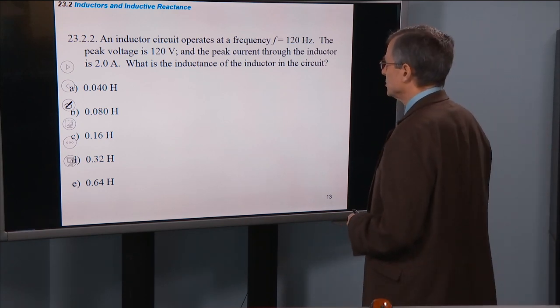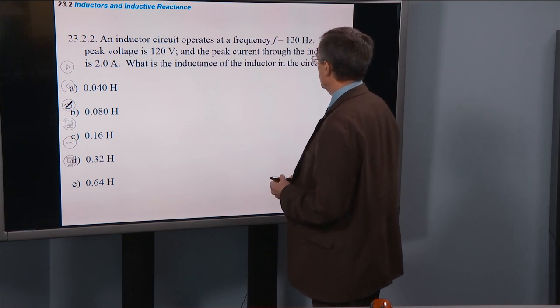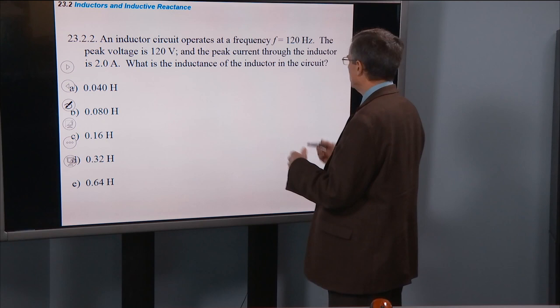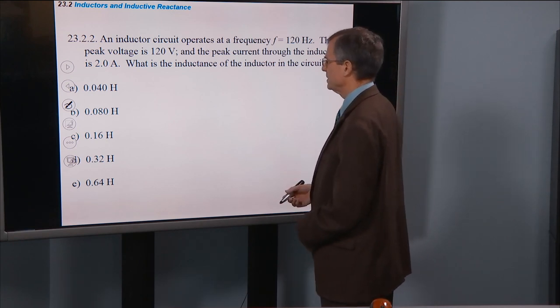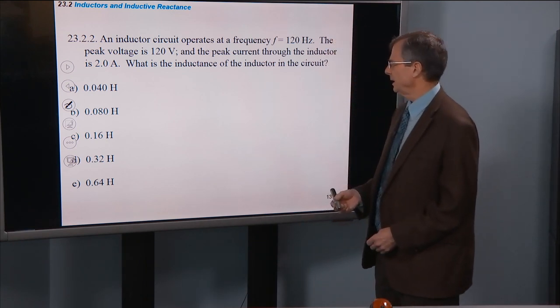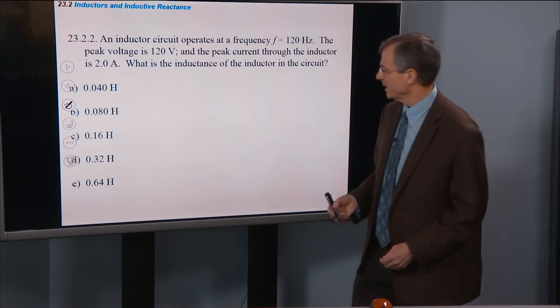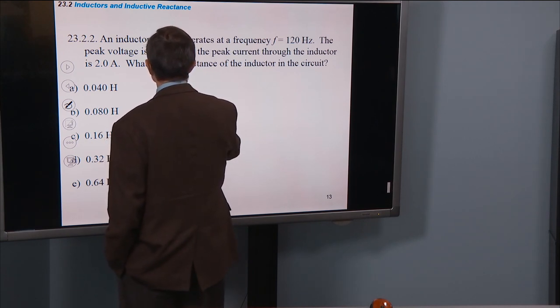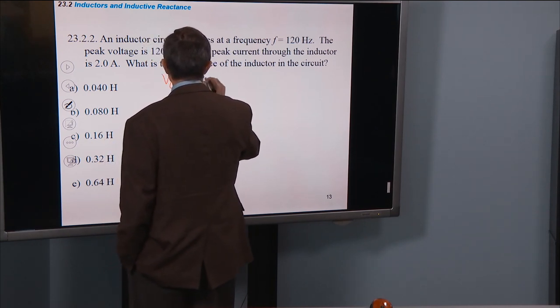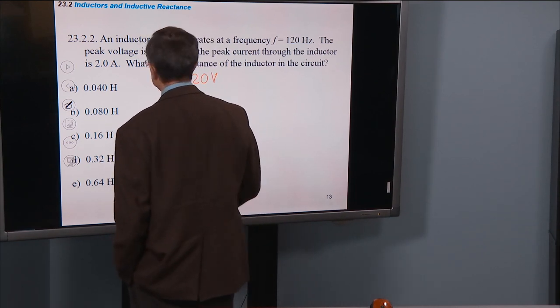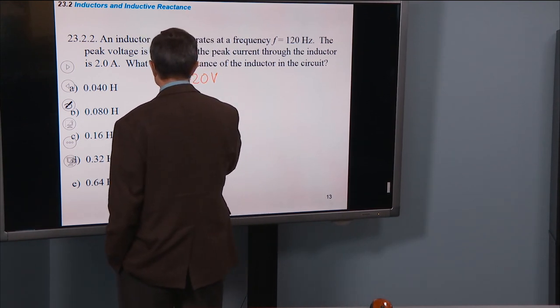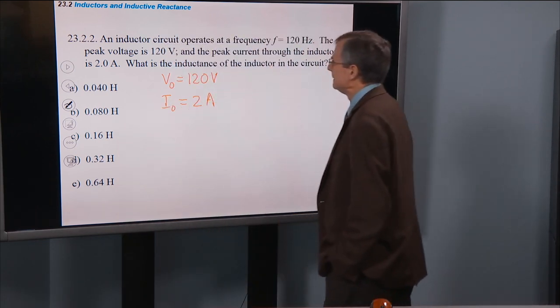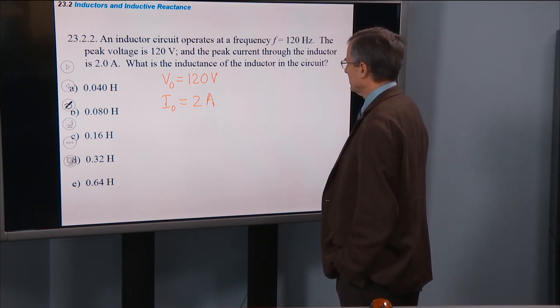An inductor circuit, a purely inductive circuit, operates at a frequency of 120 Hz, the peak voltage is 120 volts, and the peak current to the inductor is 2 amps. What's the inductance of the inductor in the circuit? All right, well, we've got a peak voltage of 120 volts. We've got a peak current of 2 amps.